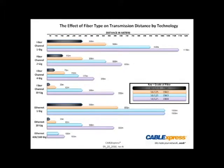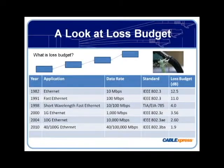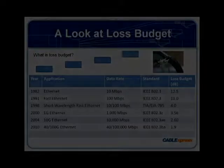The key factor is that loss budgets are decreasing as speeds are increasing. What worked 10 years ago may not work at your next hardware upgrade. So figure out what your loss budget is, and keep this in mind when designing, changing, and or upgrading your optical infrastructure.